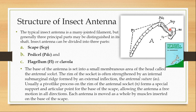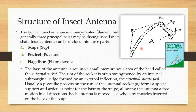The base of the antennae is set into a small membranous area of the head called the antennal socket. The rim of the socket is often strengthened by an internal sub-marginal ridge formed by an external inflection — this is the antennal suture. Usually a pivot-like process on the rim of the antennal socket forms a special support and articular point for the base of the scape, allowing the antennae free motion in all directions. Each antenna is moved as a whole by muscles inserted on the base of the scape.